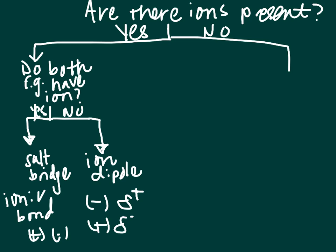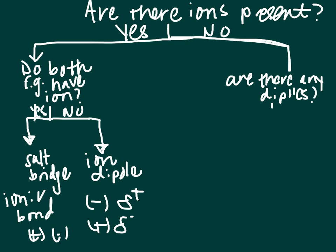So you have two functional groups whose structures you've memorized, and you look at them: if both have ions, it's a salt bridge; if only one has an ion and the other has a dipole, it's an ion-dipole. Now the rest of the interactions branch off from the 'no' path — where our two functional groups don't have full charges. The next question is: are there any dipoles, meaning partial charges?